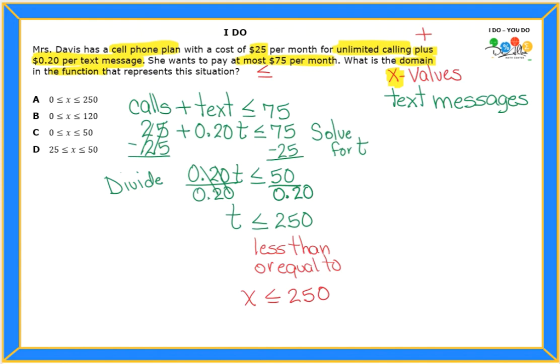So, if you look at the answer choices, what do you see? I see letter A that has the first part of it. What about the 0 on the left? What does that mean? The 0 on the left means that she can actually send 0 text messages. If she doesn't want to send any text messages, it's okay. 0 is the least amount of text messages that she can actually send. And the most will be 250. So, therefore, my answer is letter A.